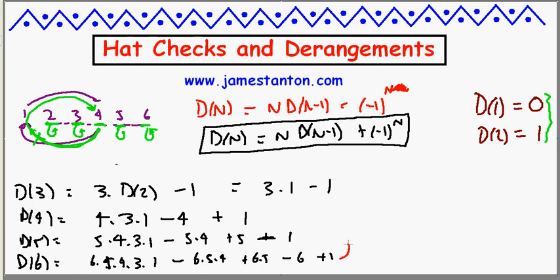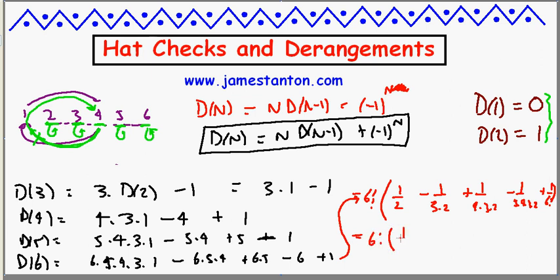Alright, this is looking crazy but if I pull out in a funky way 6 factorial from this formula, I'm left behind with 1 minus 1 over 2 factorial plus 1 over 3 factorial minus 1 over 4 factorial plus 1 over 5 factorial minus 1 over 6 factorial. And there's nothing more but I'm just going to just for completeness go minus 1 over 1 factorial plus 1.